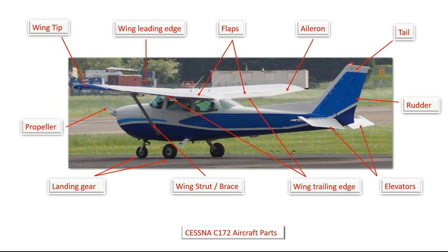On the Cessna, the wheels don't retract — they stay where they are — whereas on larger aircraft such as a 737, the wheels retract inside, which is called a retractable undercarriage. This is useful when flying at high altitude or flying faster, but as the C172 is predominantly a training aircraft, the landing gear does not retract.